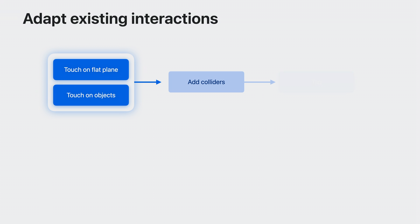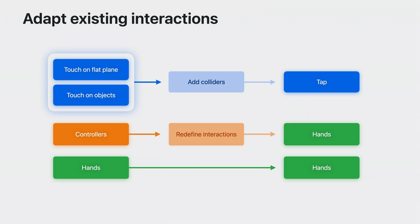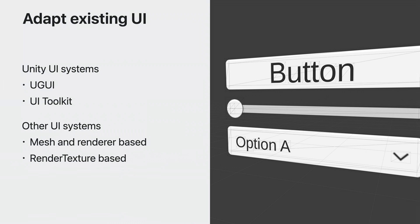The best way to adapt your existing interactions depends on the type. If you are already working with touch, such as on an iPhone, you can add appropriate input colliders and continue to use tap as your primary input mechanism. If you are using VR controllers, you will have to redefine your interactions in terms of either tap or hand-based input, depending on how complex they are. Existing hand-based input should work without changes. And if you have existing UI panels using one of Unity's UI systems, you can bring them to this platform. User interface elements built using UGUI as well as UIToolkit are supported. If you are using other UI systems, they will work as long as they use meshes and mesh renderers, or draw to a render texture which is then placed on a mesh.